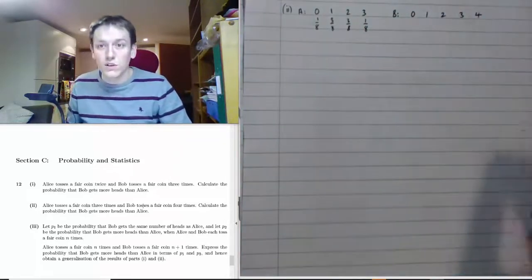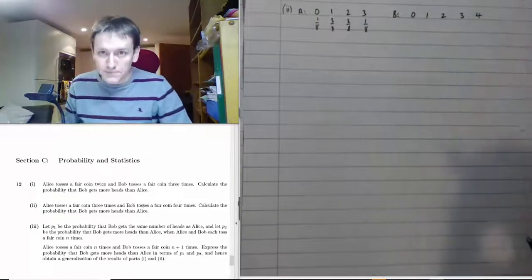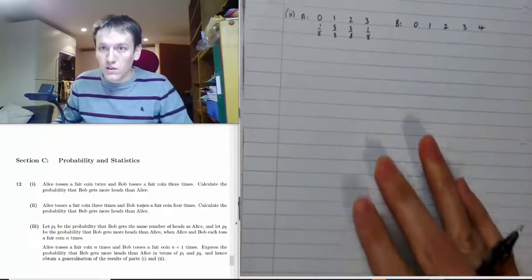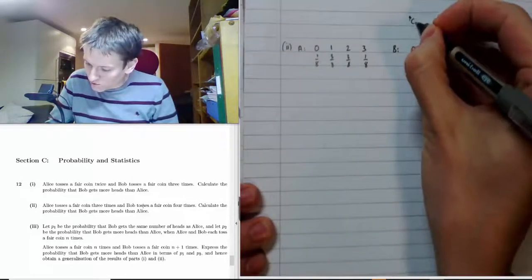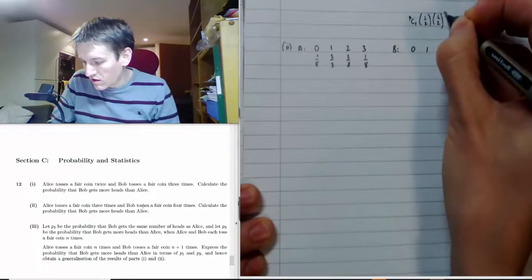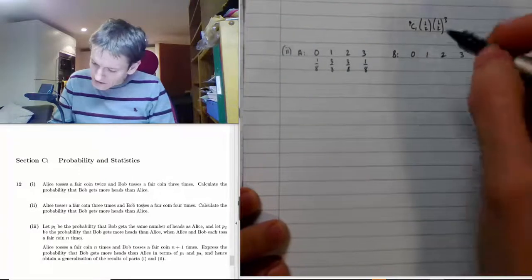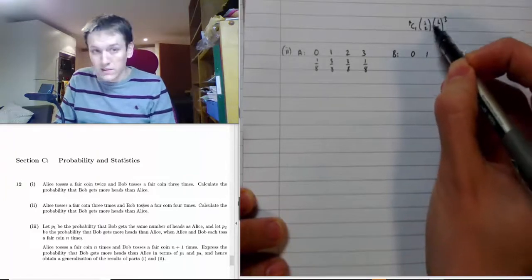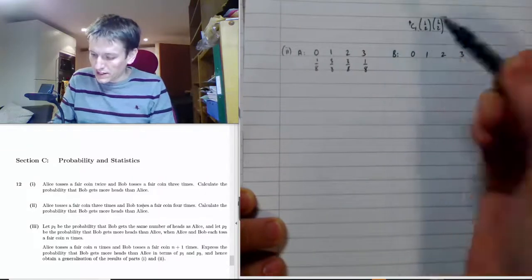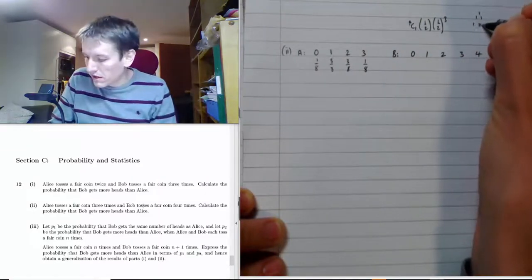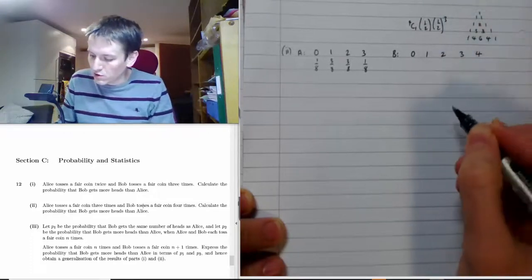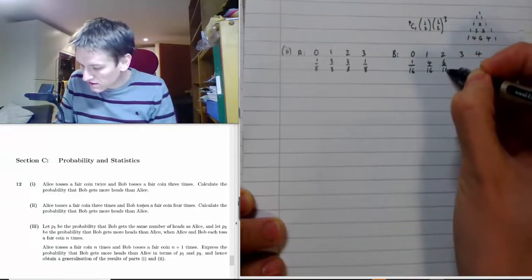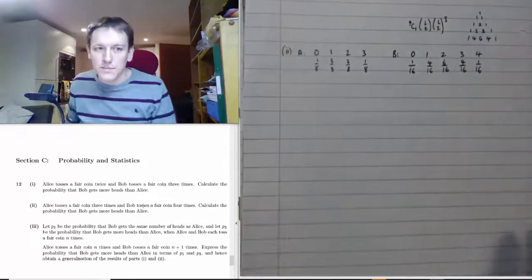Bob's probability distribution now covers 0, 1, 2, 3, and 4. These are all binomial probabilities. Because it's a fair coin, each term is half to the power of four times the relevant binomial coefficient. Looking at Pascal's triangle for that row: 1, 4, 6, 4, 1, and 2 to the 4 is 16. So the probabilities are 1/16, 4/16, 6/16, 4/16, and 1/16. Similarly, Alice's row is 1, 3, 3, 1 all over 8.